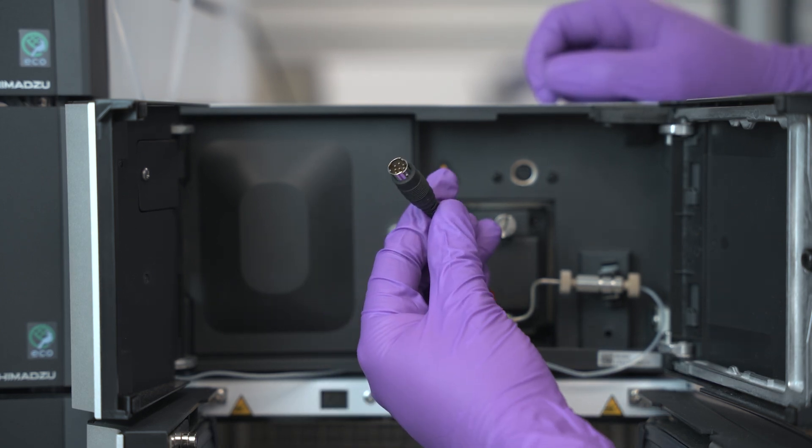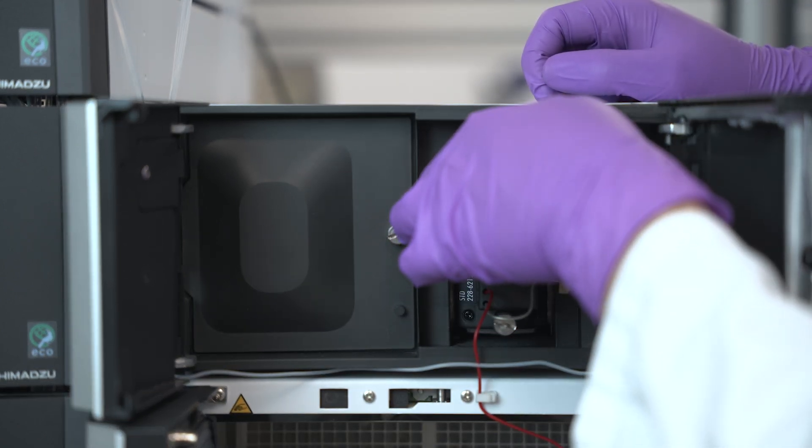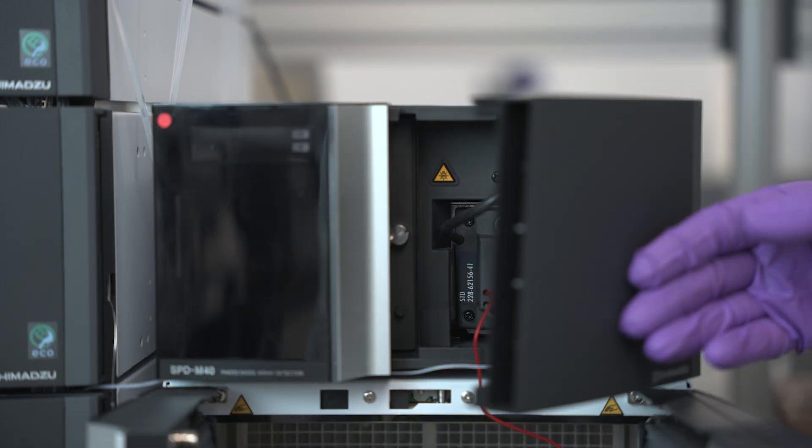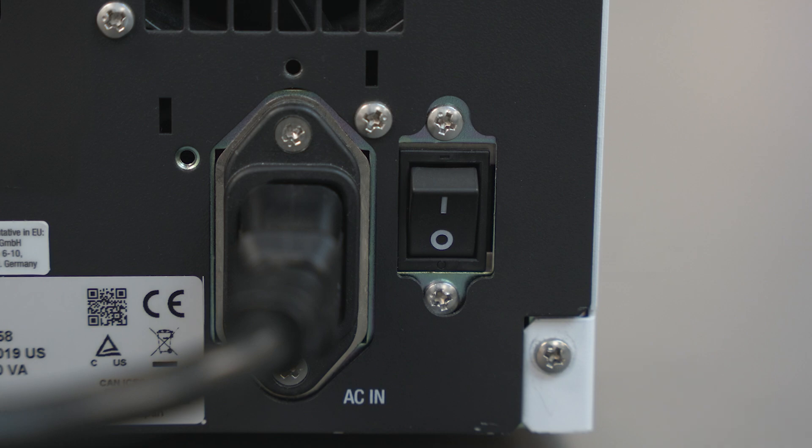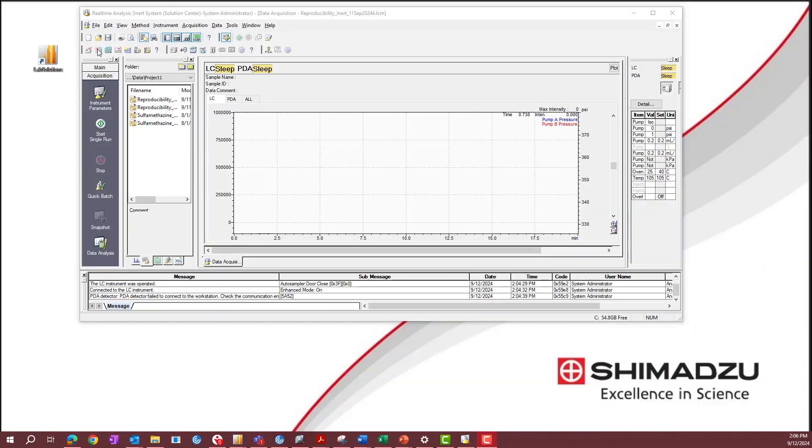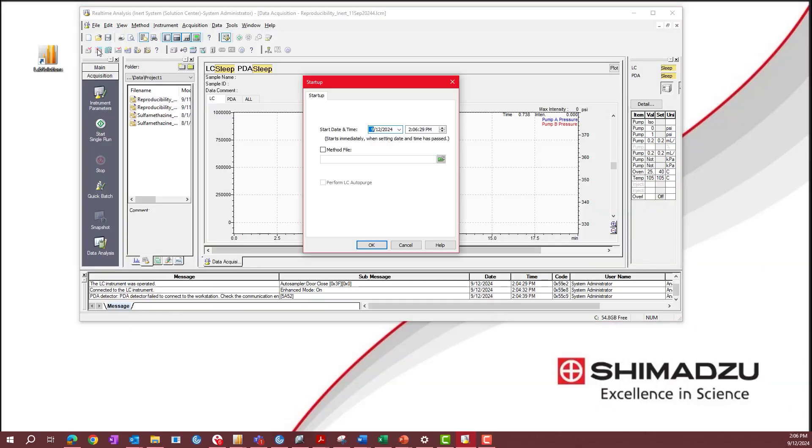Insert the connector into the instrument. Turn the detector on from the main power switch located at the back of the module. Open Lab Solutions and start up the system. Run your startup method and push out the 2-propanol from the flow cell and condition it for your analysis conditions.